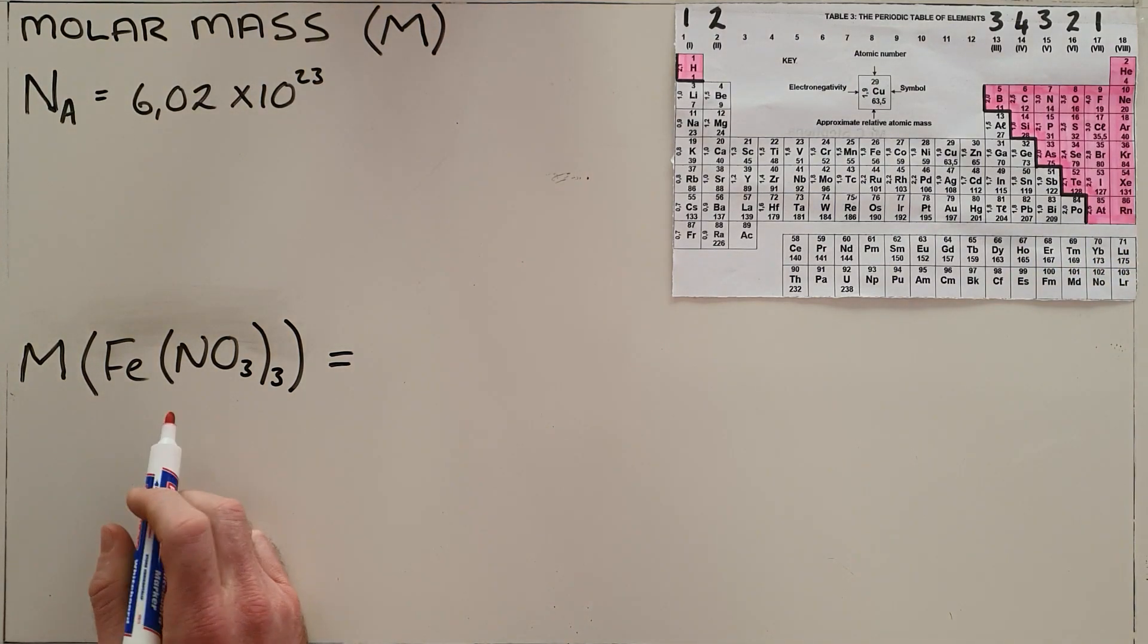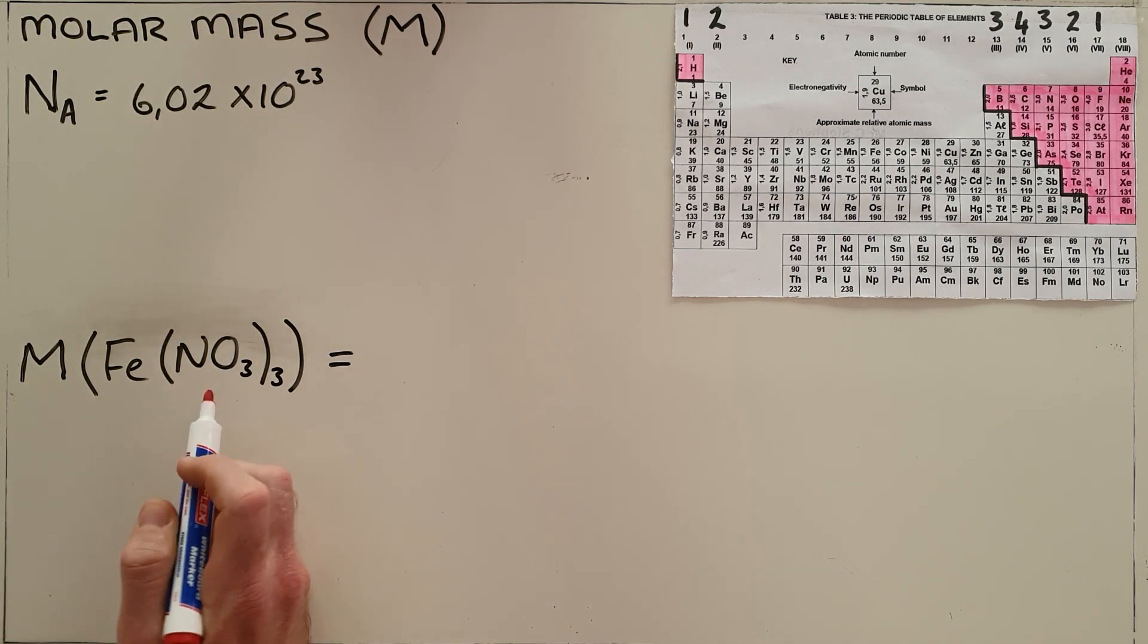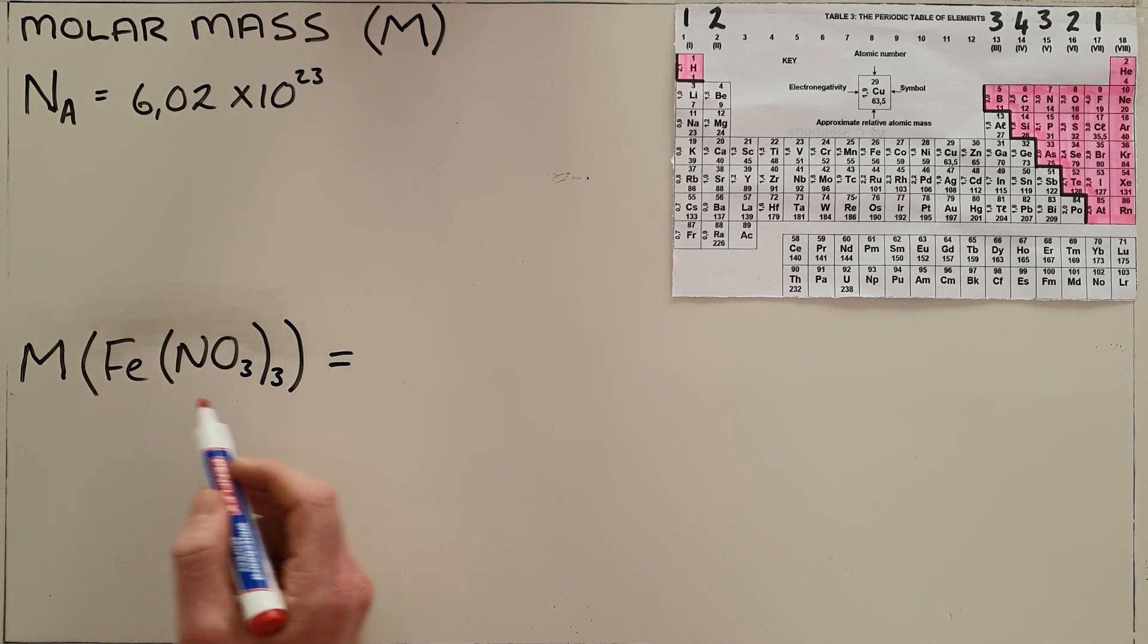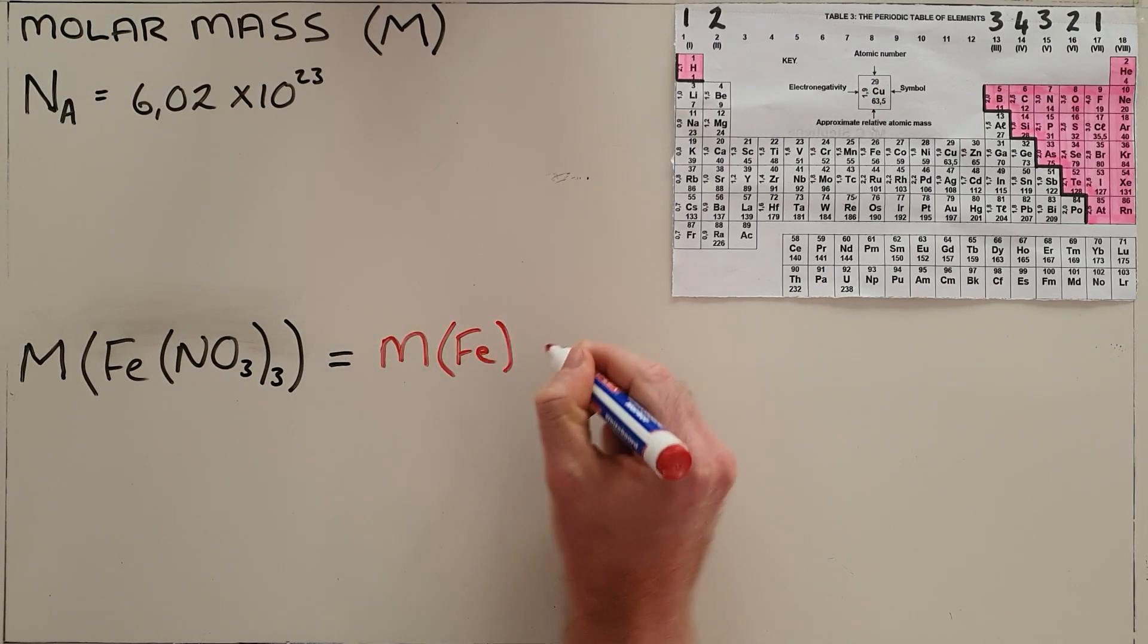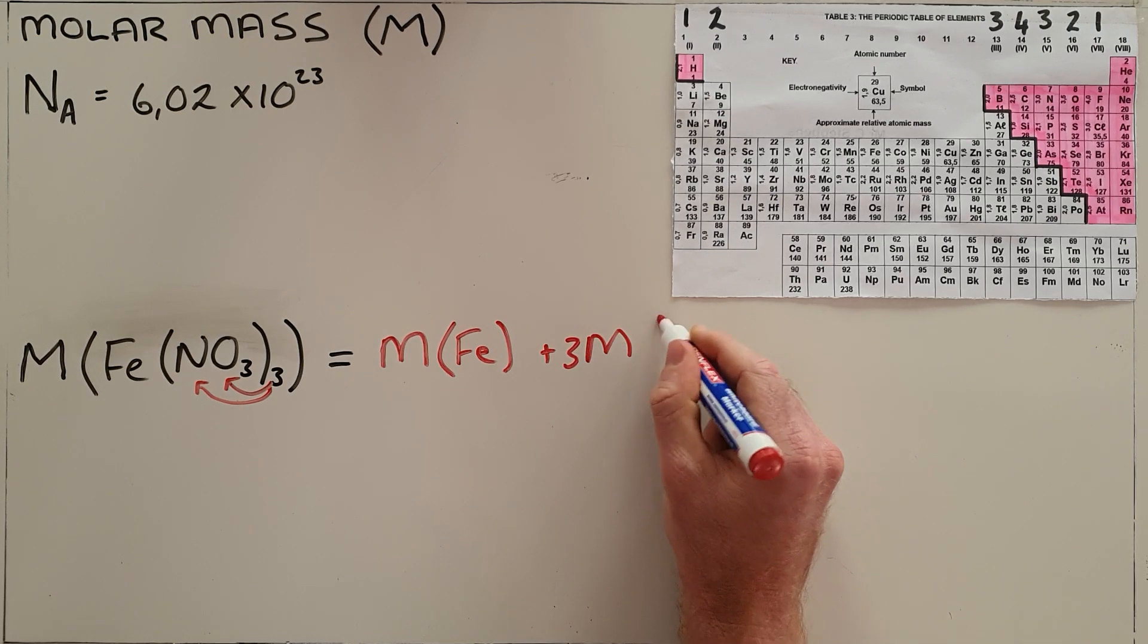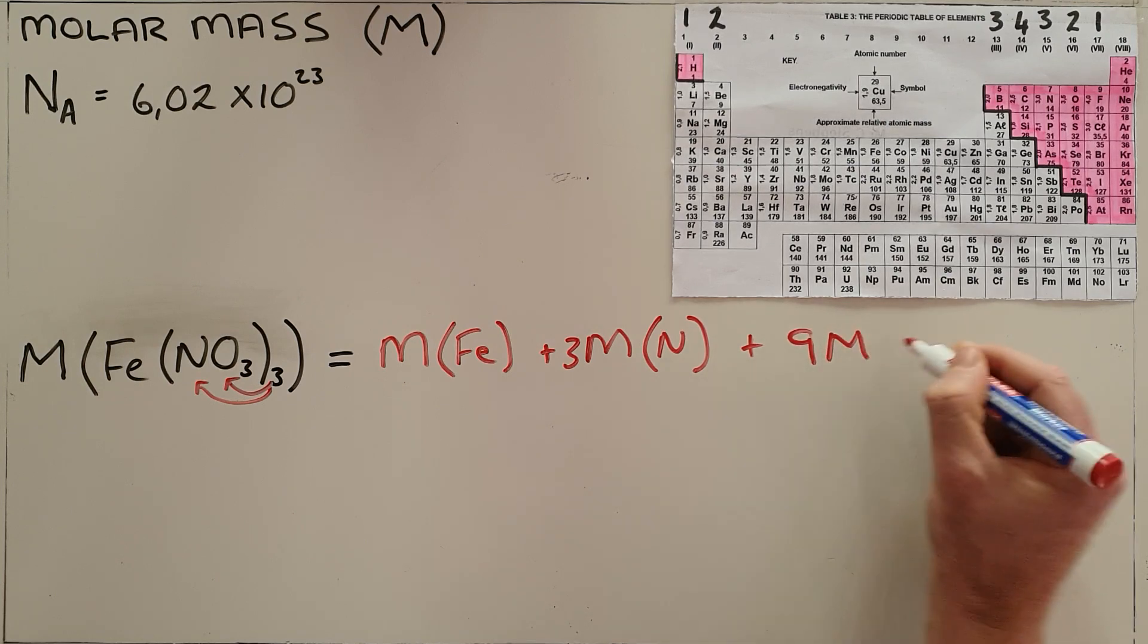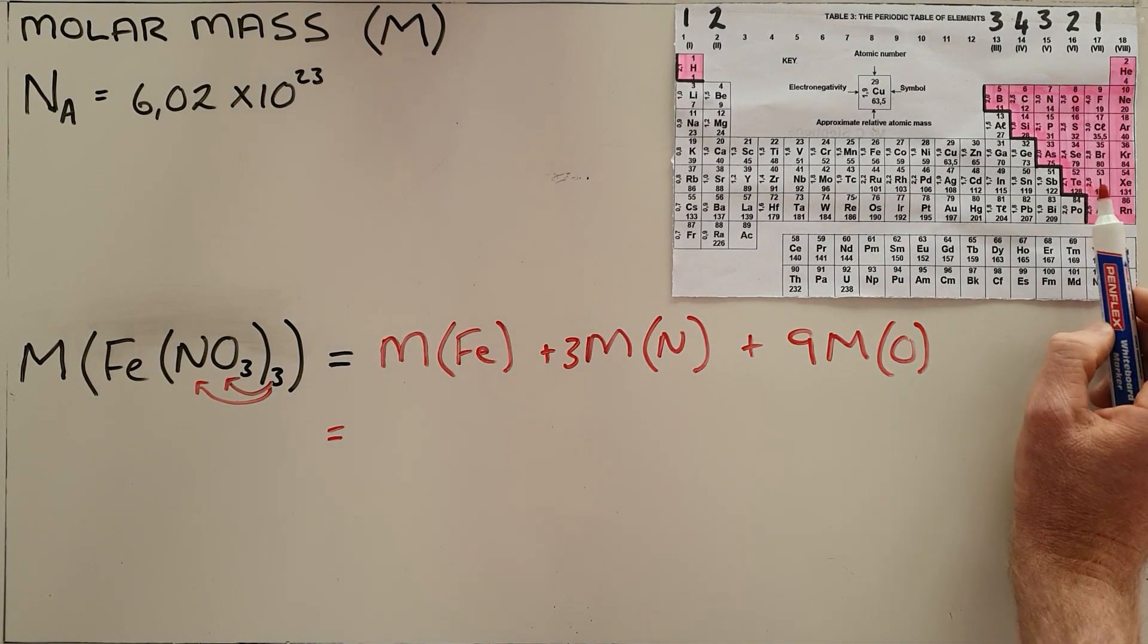So when calculating the molar mass for a compound, what we would do is we would just take the sum of the molar masses of each element present in that compound. As an example, when we are asked to calculate the molar mass for iron nitrate, what we are actually asked is to find the molar mass for one iron atom, as we can see this 3 applies to both. So that means 3 times the molar mass of a nitrogen atom and 3 times 3, 9 times the molar mass of the oxygen atom.